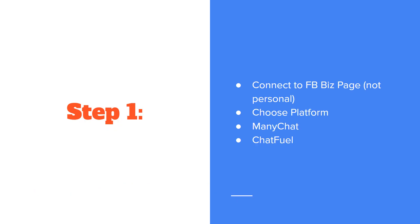So step one is to connect your Facebook business page to whatever chatbot platform you're going to be using. I'm going to be showing you ManyChat — it's very easy to use, very flexible, and very powerful. ChatFuel has a little bit more features and is a little more technical, but you can accomplish everything you want initially with ManyChat. Whatever you end up using is up to you, but the main thing is that you implement this. Once you've chosen your platform, just connect it to your Facebook business page — it only takes a few minutes and ManyChat is free to get started.